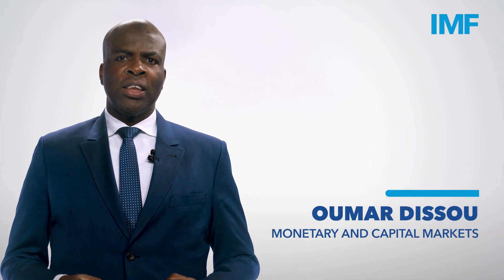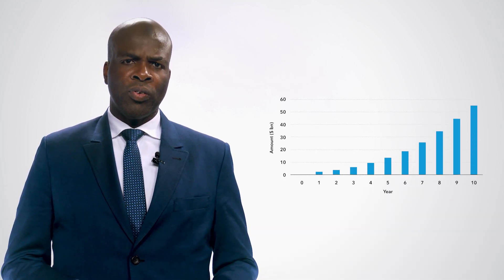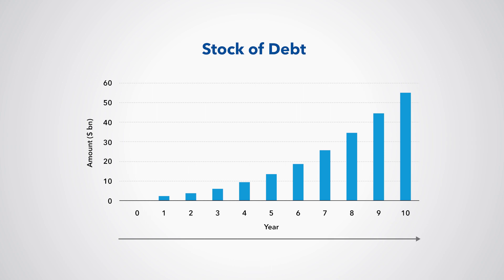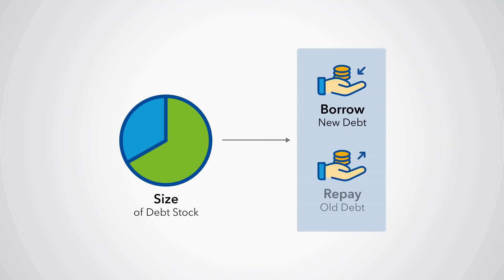When we think about public debt, we might think about a large amount of debt that a country has borrowed. That number is the stock of debt. It tells us how much debt has been borrowed over time and gives us an amount of debt outstanding at a specific point in time. The size of the debt stock is determined by decisions to borrow new debt and to repay all debt as it comes due.